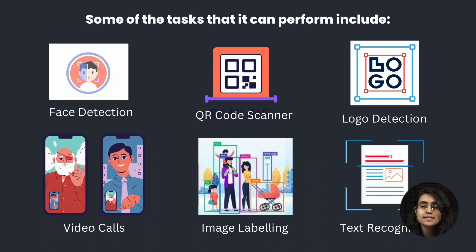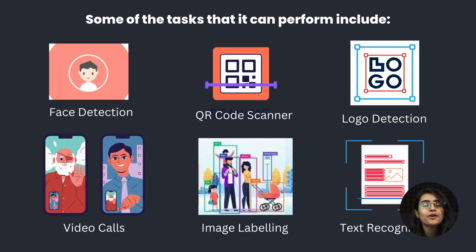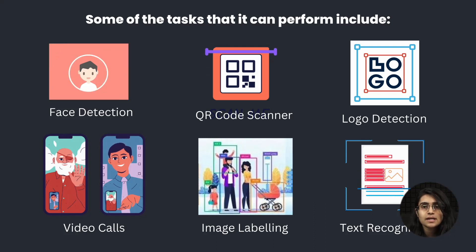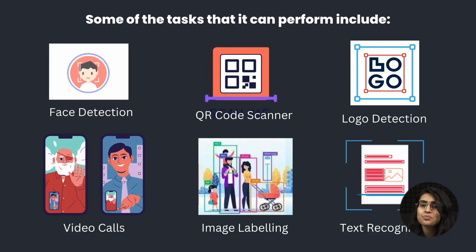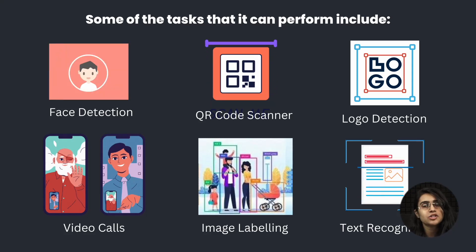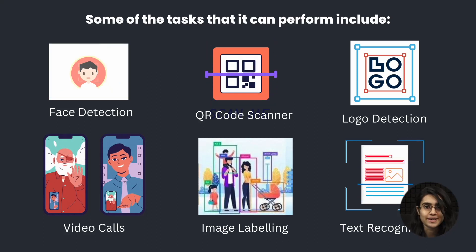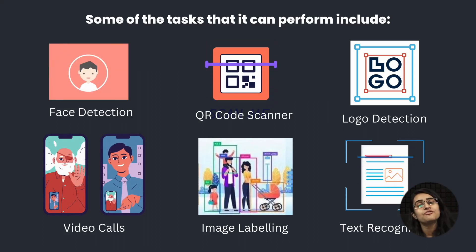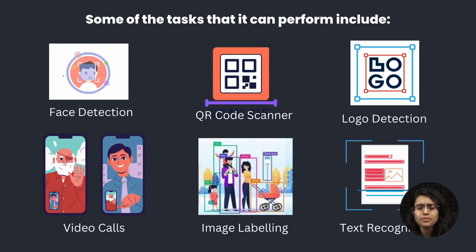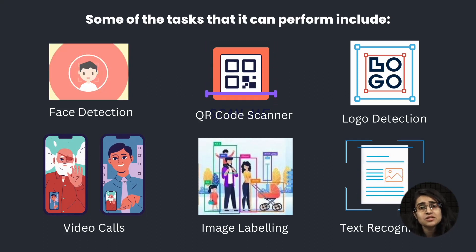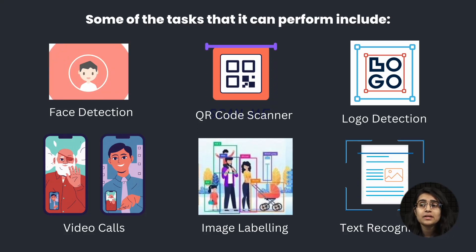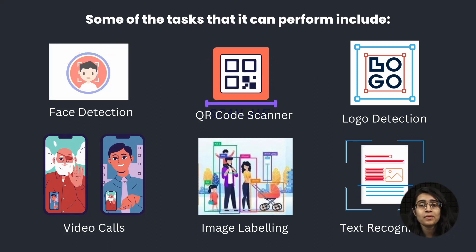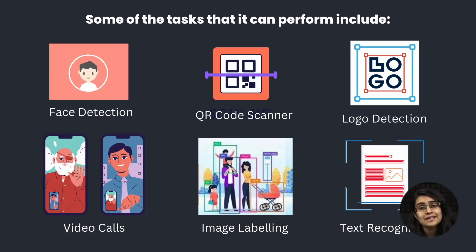Then there is text recognition — for example, take Google Lens. It scans through the whole thing, detects where text is present, and returns it as a string. Apart from this, there are many other features like safe search recognition, where it finds whether the content is violent or not.